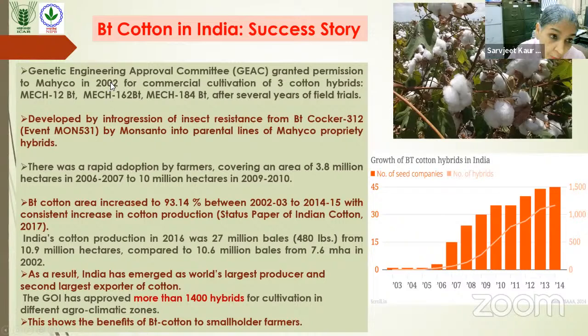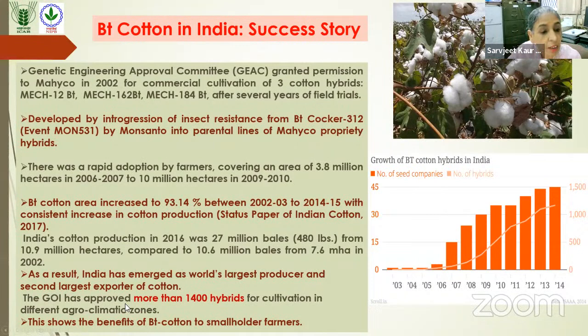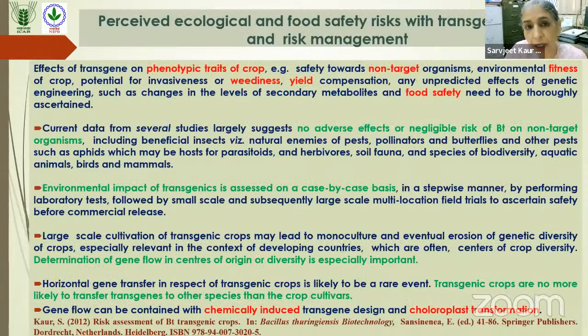The Bt cotton success story in India has been very successful. The first commercial approval was in 2002 for three cotton hybrids. Subsequently, we now have more than 1,300 hybrids. These are different cotton hybrids optimized for different locations in India — hybrids performing well in different regions had the Bt gene transferred into them. As a result, India has emerged as the largest producer and significant exporter of cotton.